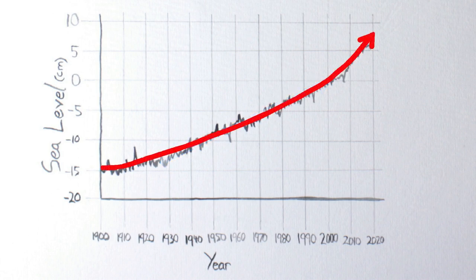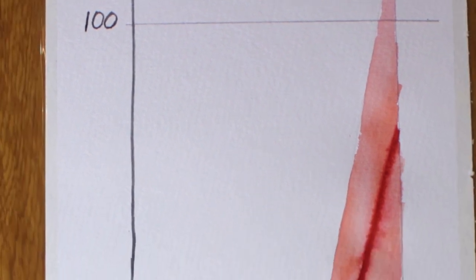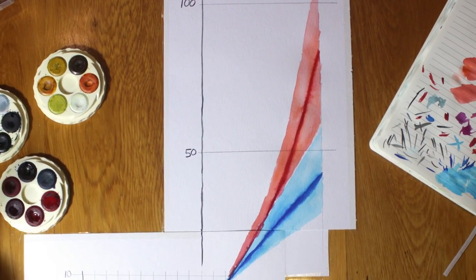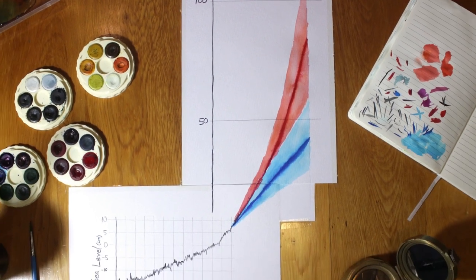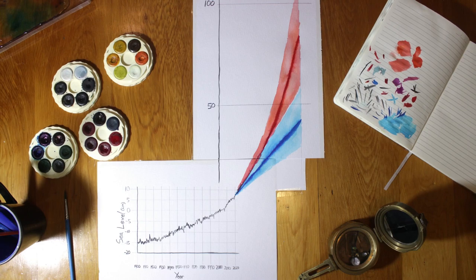If this trend continues, sea level rise will get faster and faster over the years. Predictions show that if we do a lot of work to slow it down, sea level may rise by less than 50 centimetres by the year 2100. However, if nothing is done, the sea could rise by up to or even more than a metre by then. There are still a lot of questions about sea level rise that scientists are trying to answer, but some things are now very clear: the ocean is rising and it's speeding up.